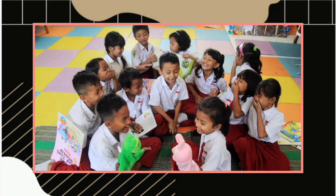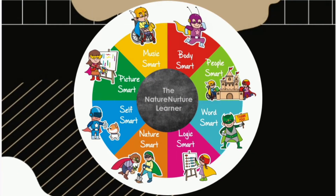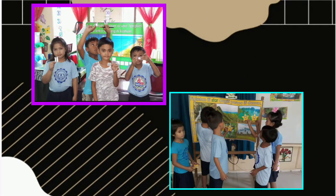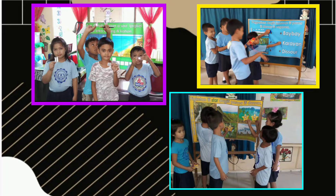We still need literacy and numeracy and an understanding of the way the world works, but the way we achieve that can happen differently. We need to develop skills with systems and technologies that haven't even been invented yet. Shift the focus to make learning real, make learning meaningful, and individualize content for every student.